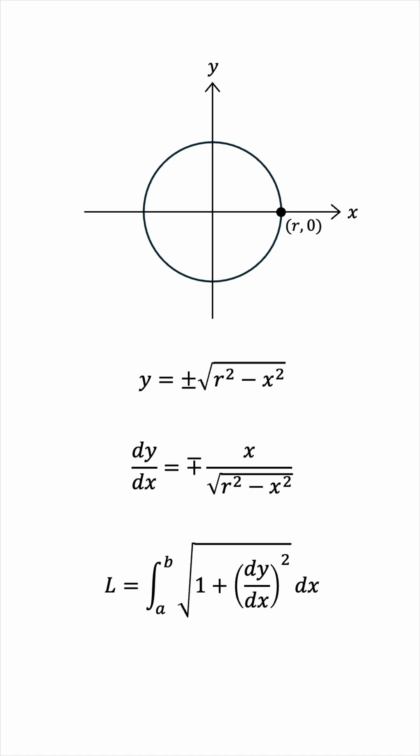Now, we're going to have to square it, so the plus or minus doesn't matter anymore. We'll have x squared on the top, and the square root in the denominator will get cancelled.